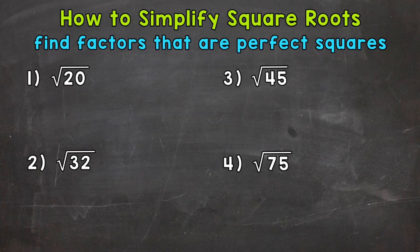Let's jump into number one, where we have the square root of 20. Now 20 is not a perfect square, so we're not going to get a nice and clean whole number answer. So we need to simplify. We can do this by looking for factors of 20 that are perfect squares, and then find their square roots.